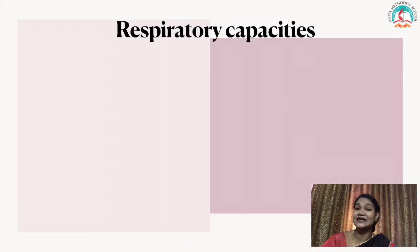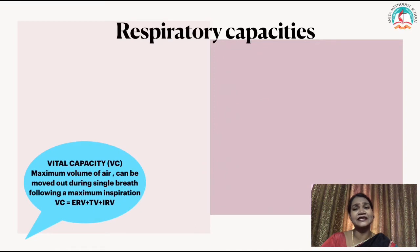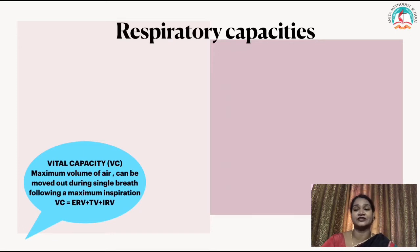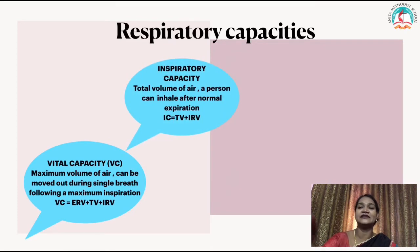Now let's learn about respiratory capacities — how much air the lungs can bear during respiration. The first is vital capacity (VC): the maximum volume of air that can be moved out during a single breath following a maximum inspiration. VC equals ERV plus TV plus IRV, where TV is tidal volume and IRV is inspiratory reserve volume.